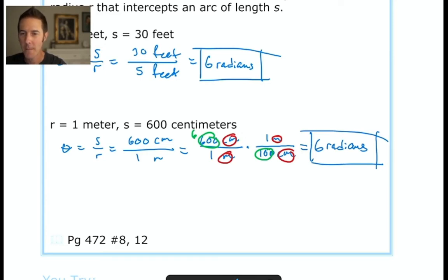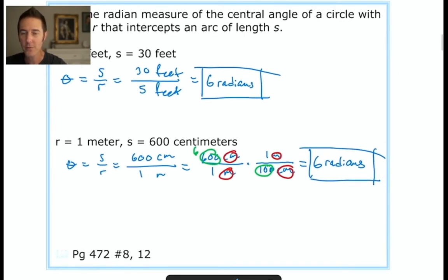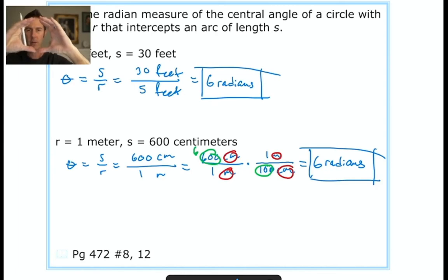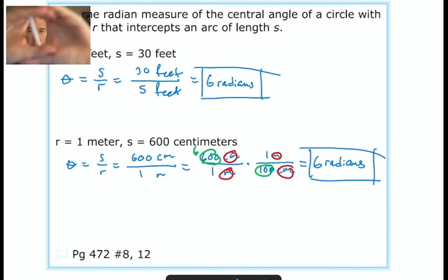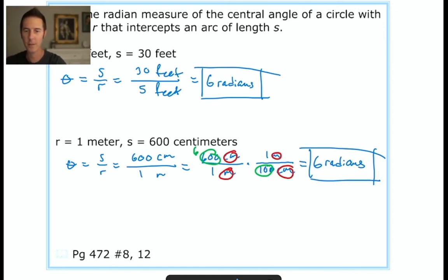Both problems give the same answer of 6 radians, even though they have different arc lengths and radii. What's happening is that the same interior angle measure is required to intercept those two different arc lengths — you're just scaling the circle up or down. The angle itself doesn't change.